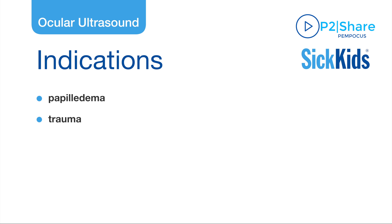Another indication is in the assessment of a trauma patient for pathologies such as foreign body, retinal detachment, vitreous hemorrhage, and lens dislocation. If an abnormal red reflex is visualized, you may use POCUS to determine if there is an orbital mass, such as a retinoblastoma.